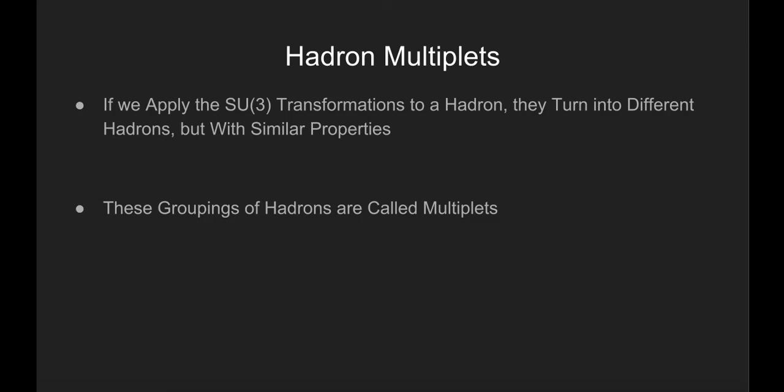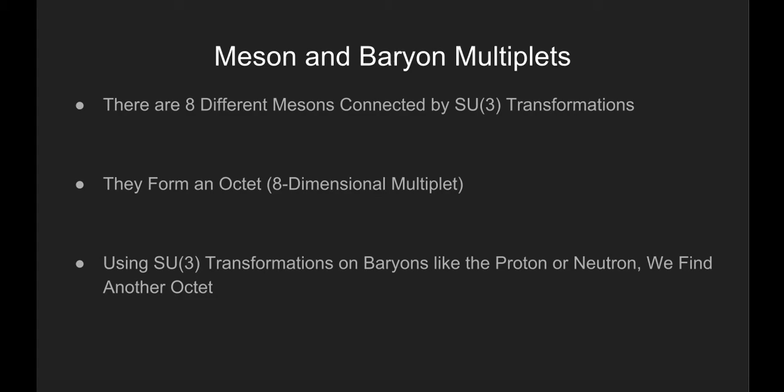Murray Gell-Mann found that if we apply SU3 transformations to hadrons, we can change them into different hadrons that have similar properties. These collections of hadrons are called multiplets. Applying the SU3 transformations to a meson yield a total of eight different mesons, which form an eight-dimensional multiplet or an octet.